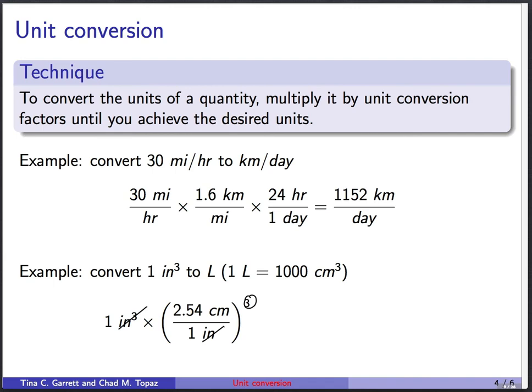That'll give us a quantity in terms of cubic centimeters. Then we can multiply by 1 liter per 1,000 cubic centimeters. So these cubic centimeters and these cubic centimeters cancel. These cubic inches and these cubic inches cancel. We're left with 1 times 2.54 cubed divided by 1,000 liters. And if you plug all those numbers together, you get about 0.016 liters.